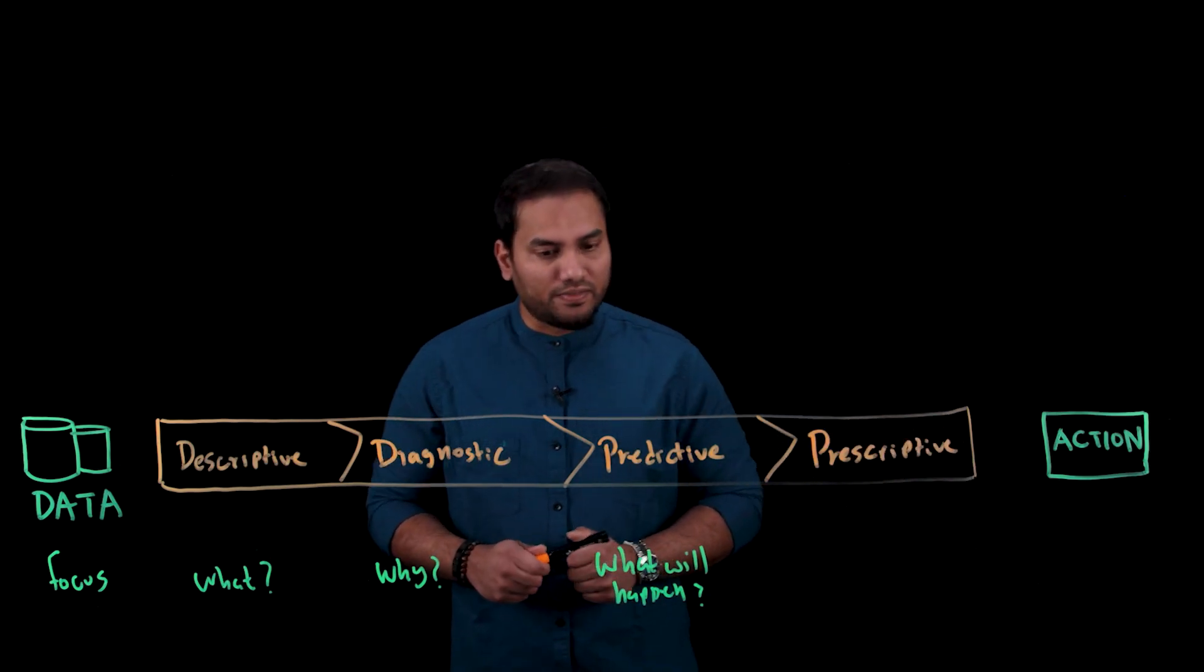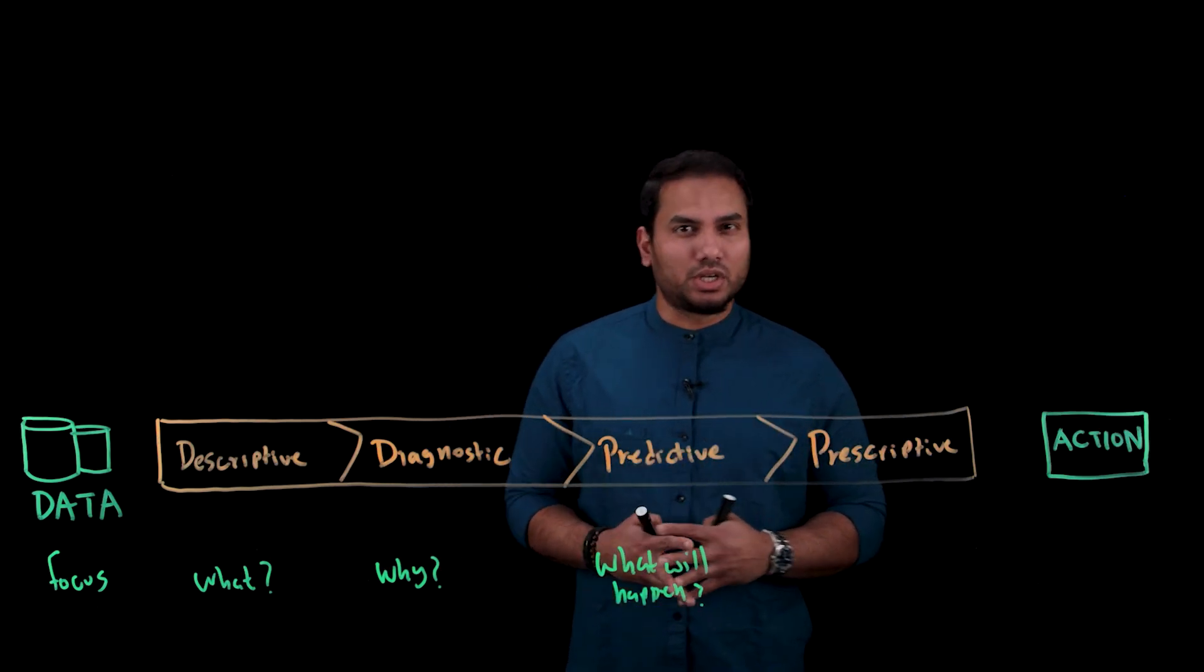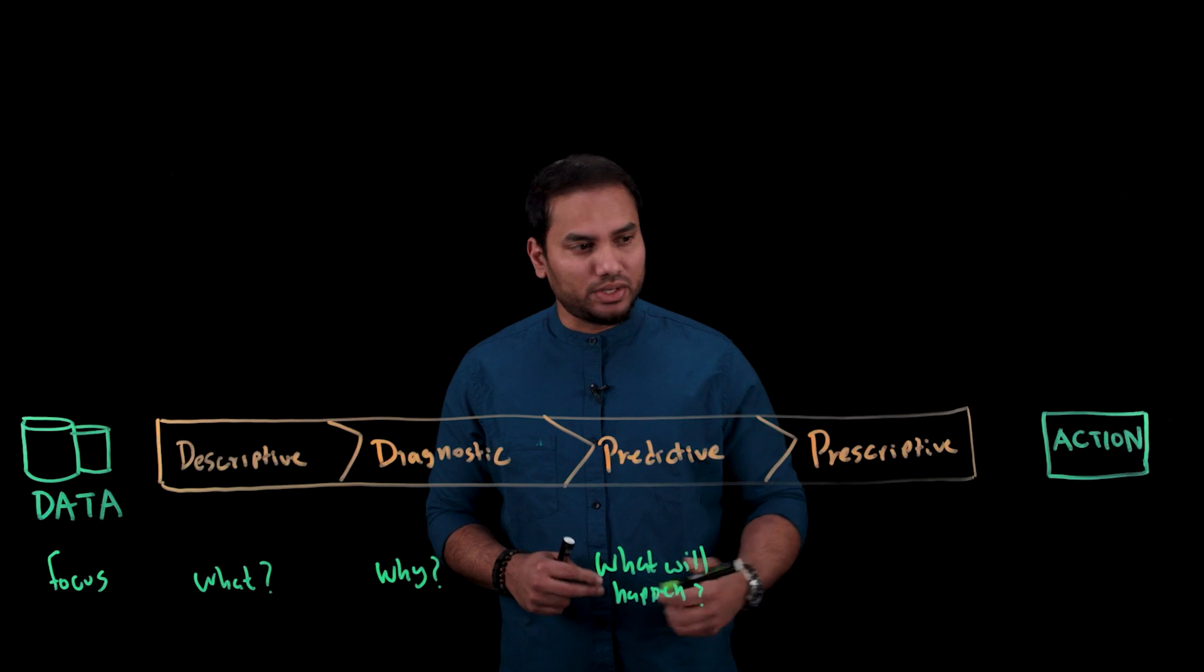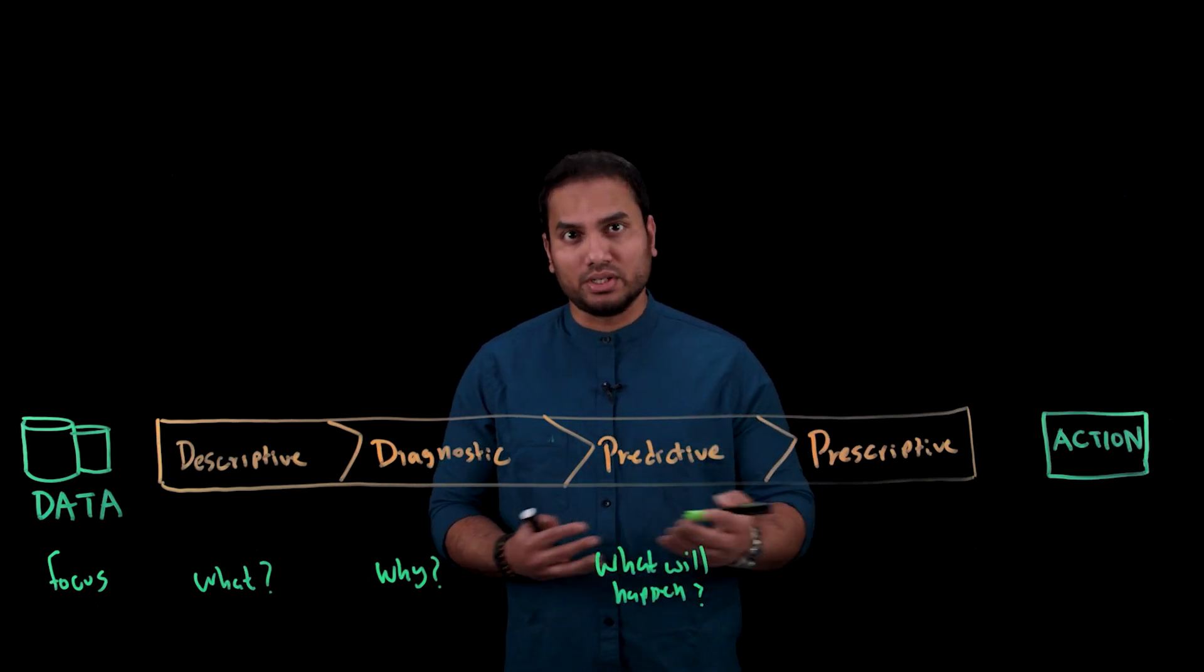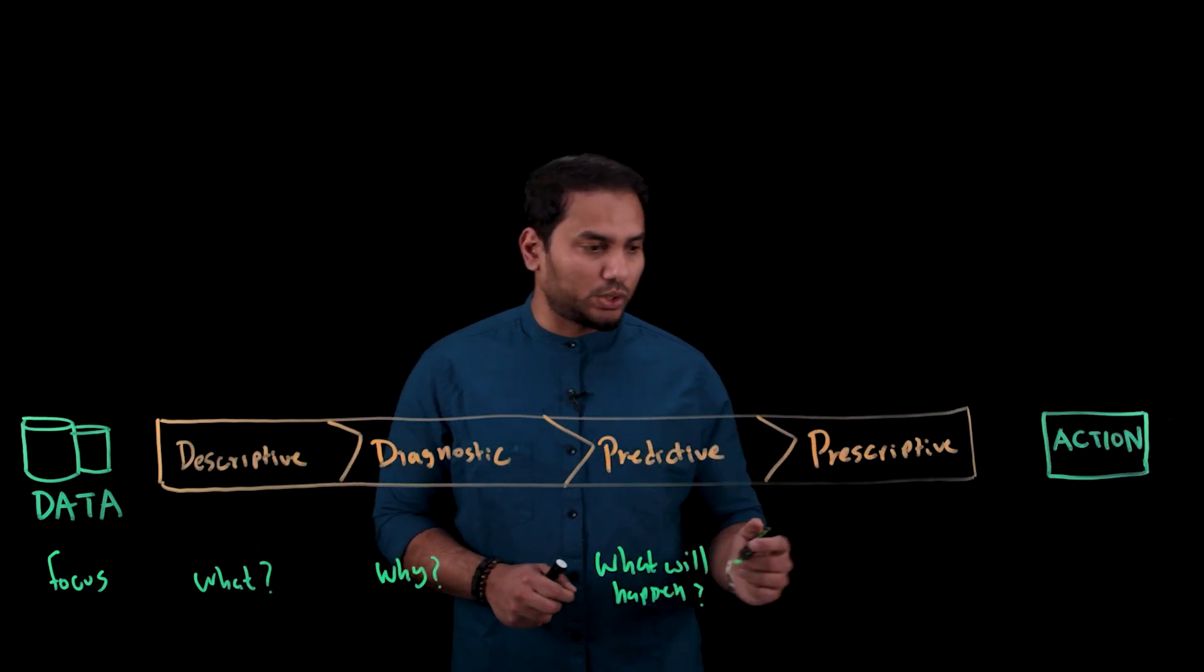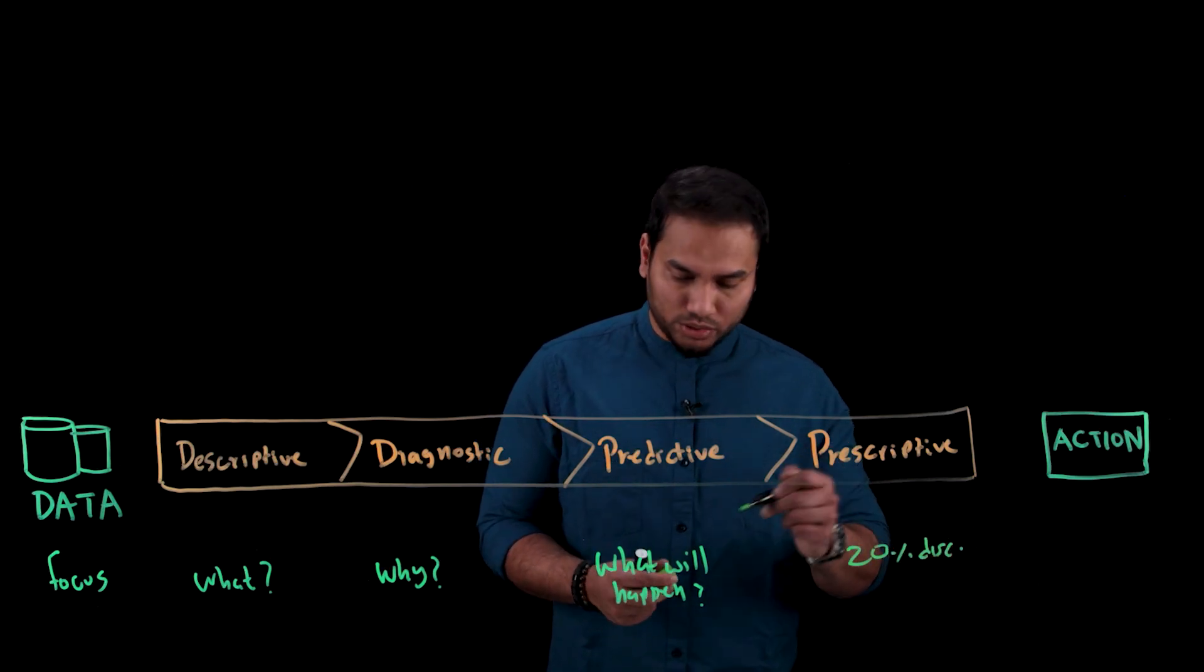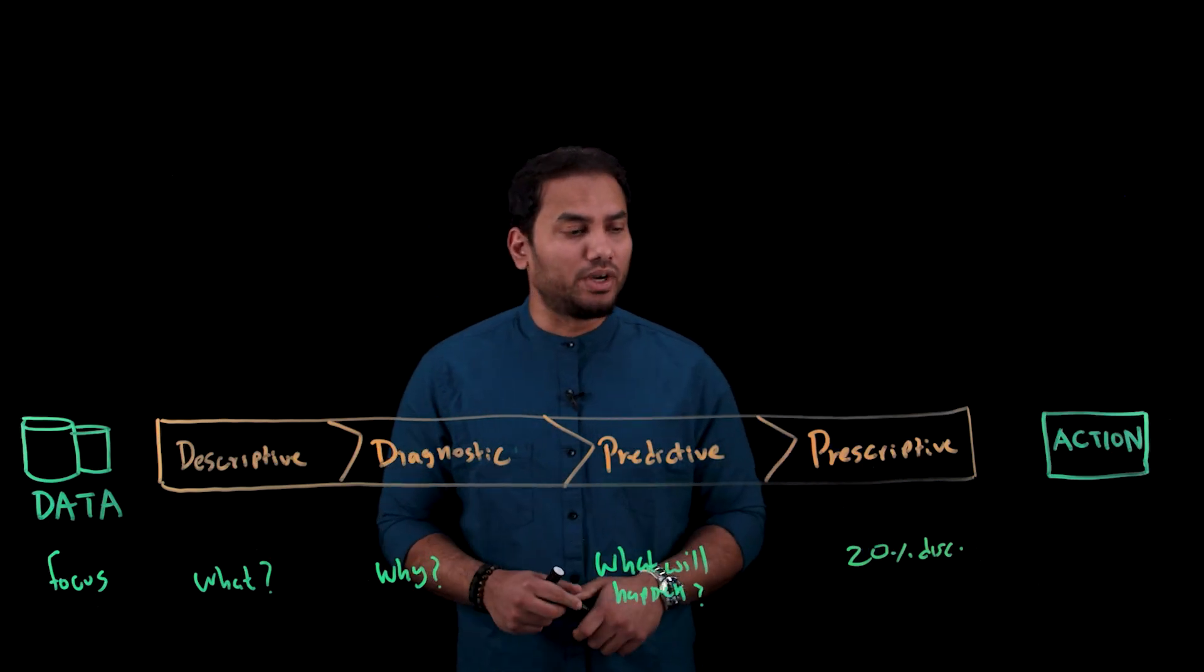This is the fourth pillar of analytics. And typically, at this point, you would run some decision optimization algorithms and so on to come up with a recommendation or a piece of insight that you could action to reverse a certain trend. So an example of a prescriptive analytics, a piece of prescriptive analytics would be, offer a 20% discount to users showing high probability of churn at time of renewal.